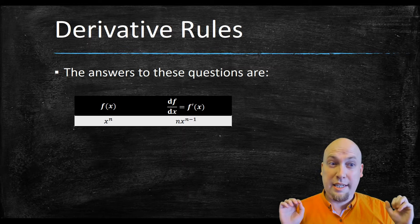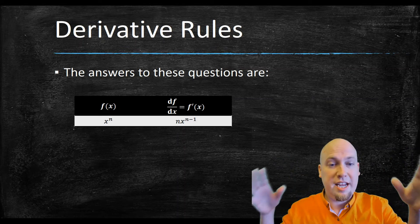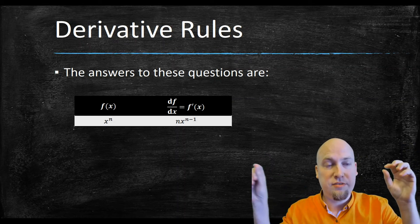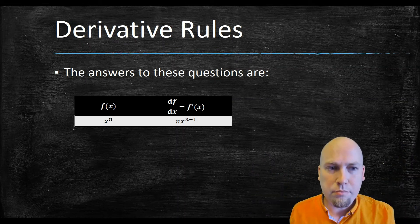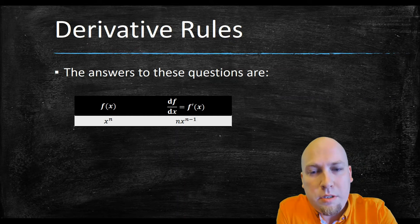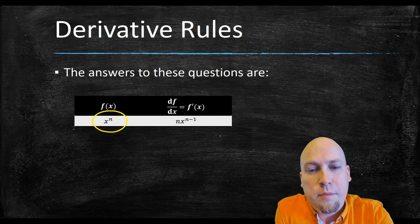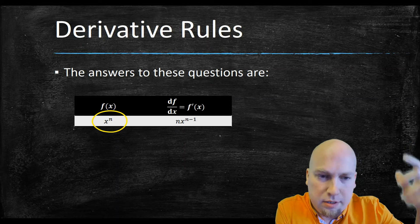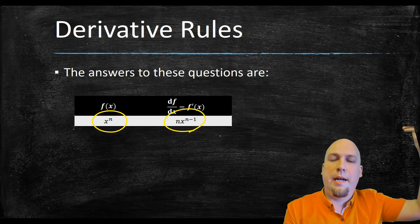I'm just going to give you the answers — a table that tells you the derivative of each function. The first row is the power rule: the derivative of x to the power n, where n is a constant, is n times x to the power n minus 1.